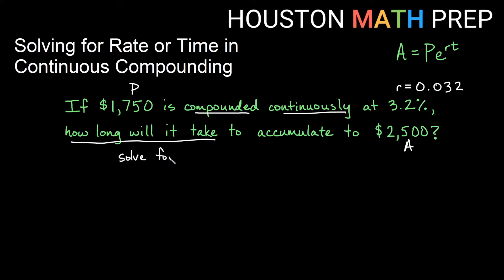So we will use our equation and we'll leave t in the equation and plug everything in. So we will get A equals, which is $2500, equals $1750 times e to the r times t. So that's going to be to the 0.032 times t.